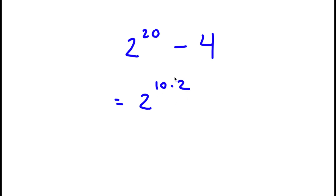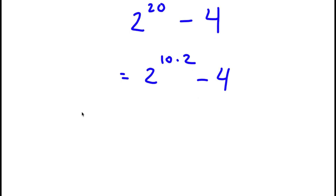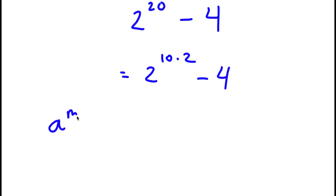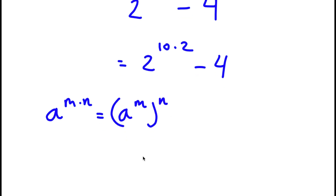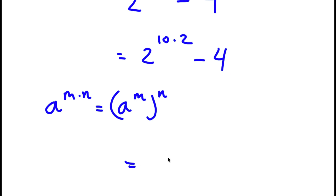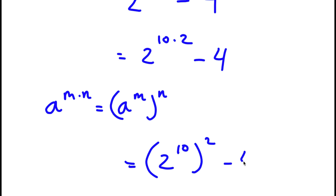So I have 2 to the power of 10 times 2 minus 4. Now, if I have something in the form a to the power of m times n, this is equal to a to the power of m to the power of n. So 2 to the power of 10 times 2, we can rewrite as 2 to the power of 10 to the power of 2. Now I have this minus 4.